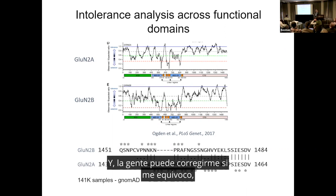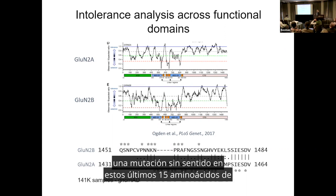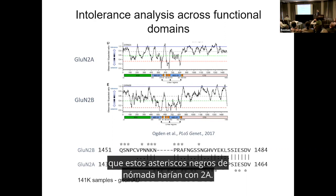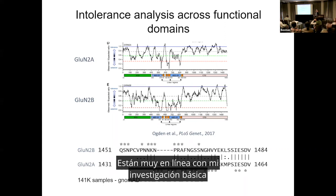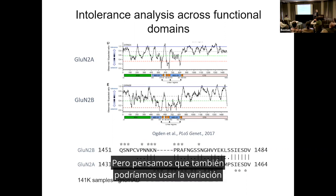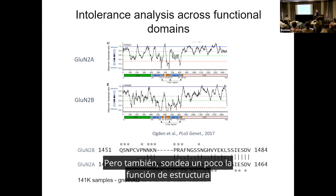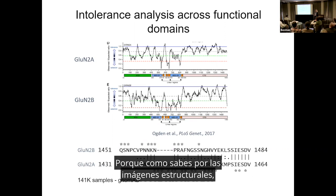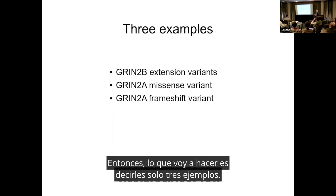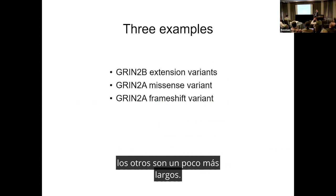As of now, we don't find in any database a missense mutation in the last 15 amino acids of 2B. The black asterisks from gnomAD in 2A are very much in line with my basic research. We thought we could also use human variation to learn about synaptic dysfunction with disease and probe structure-function, since there is no resolved structure for this region.